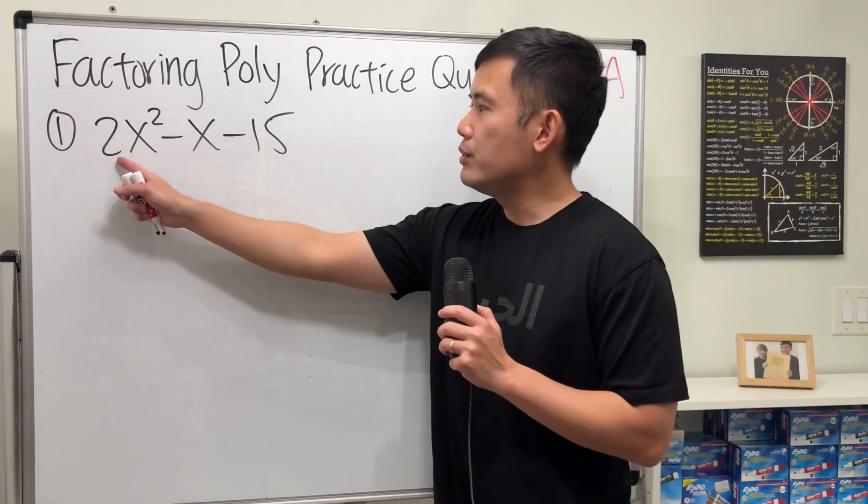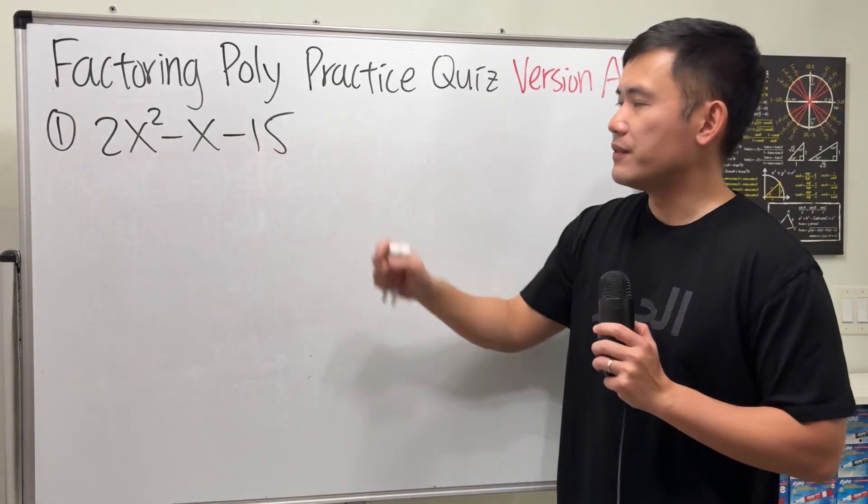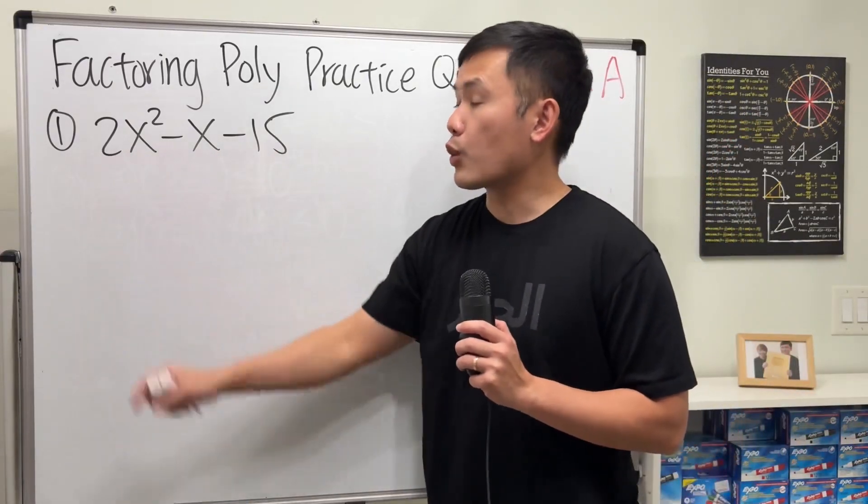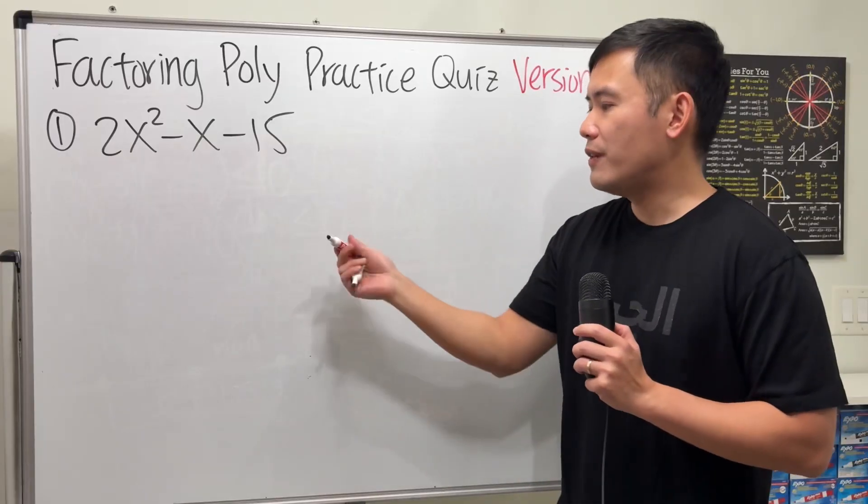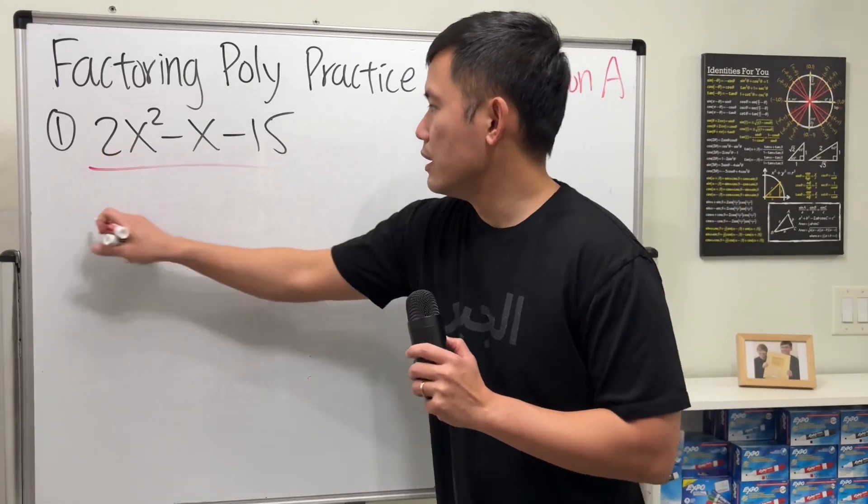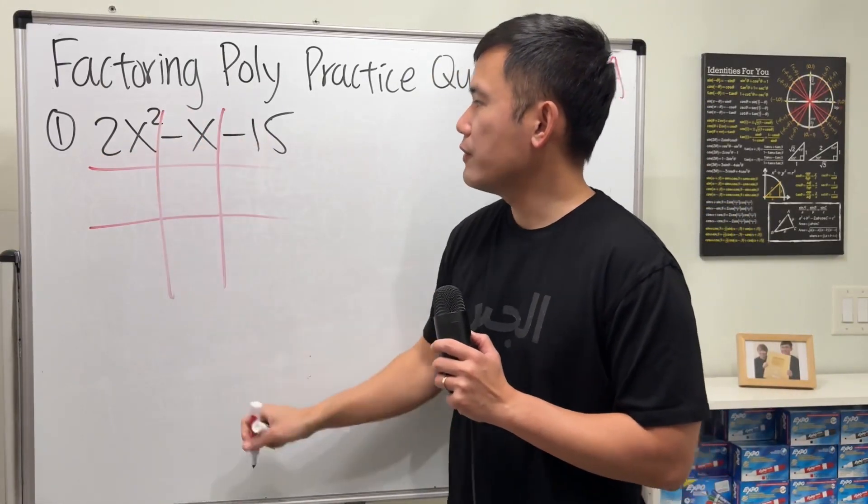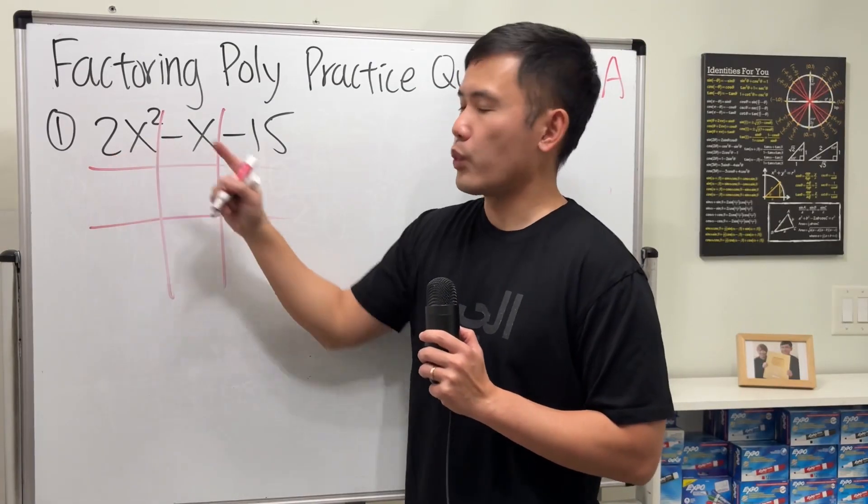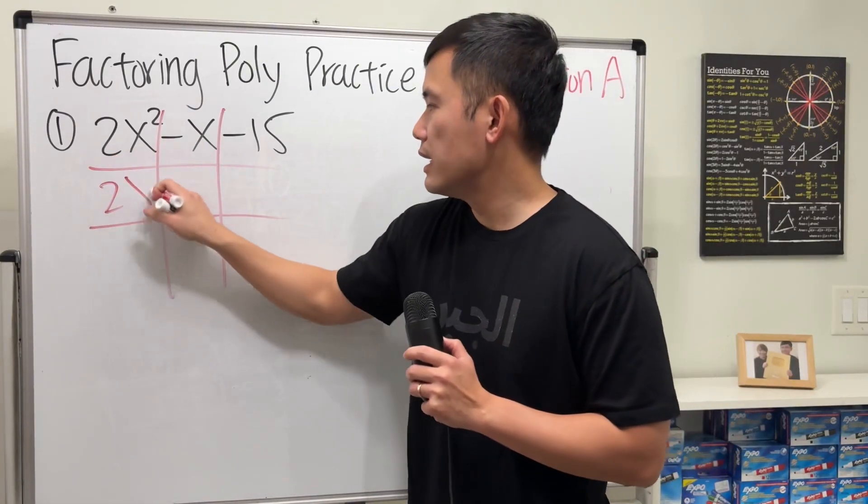For the first one, we have 2x squared minus x minus 15. This is a quadratic trinomial, we factor this by the tic-tac-toe. And then we ask ourselves, what times what will give us 2x squared? Well, 2x and x.